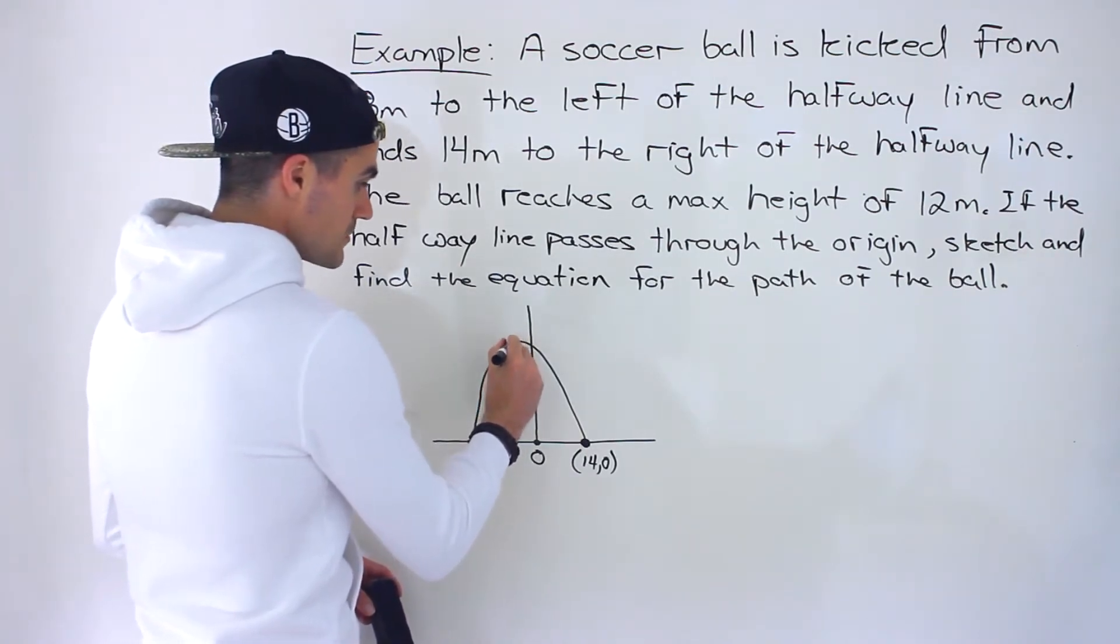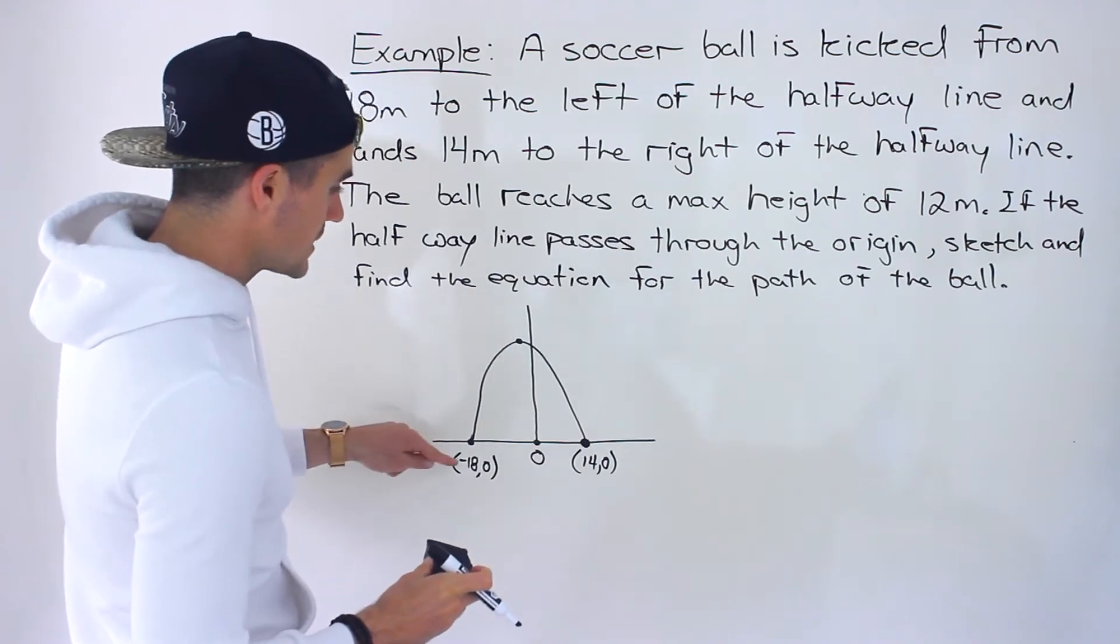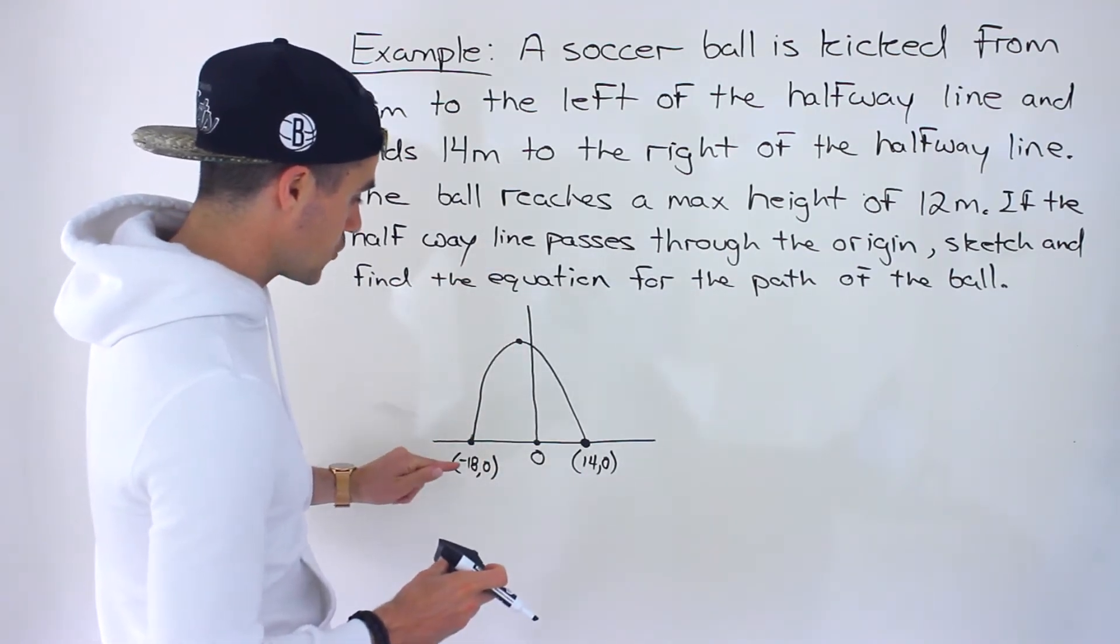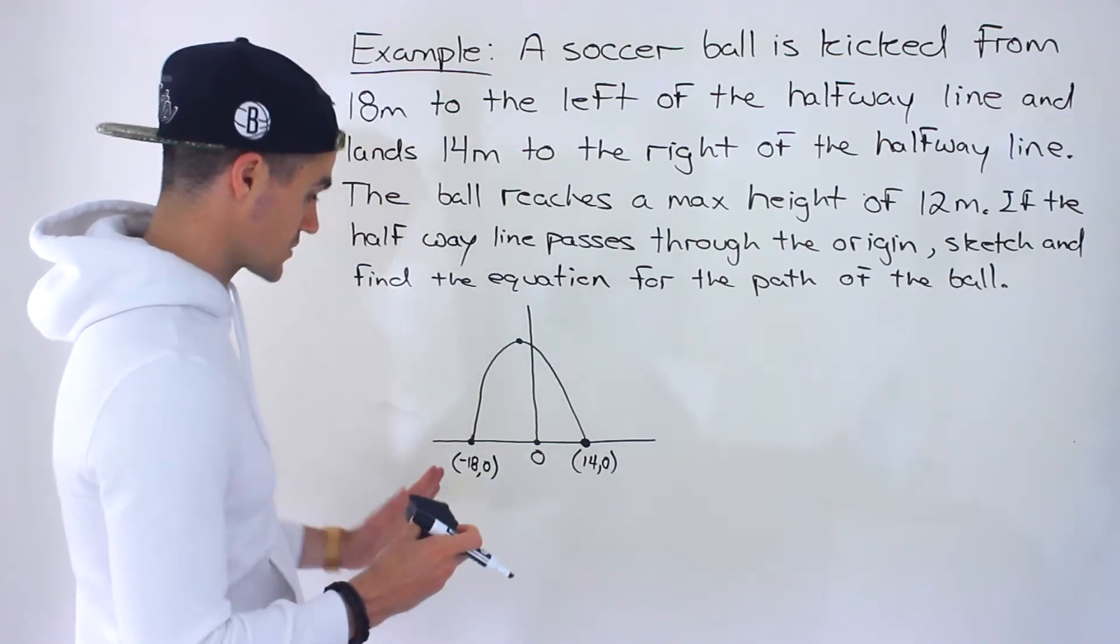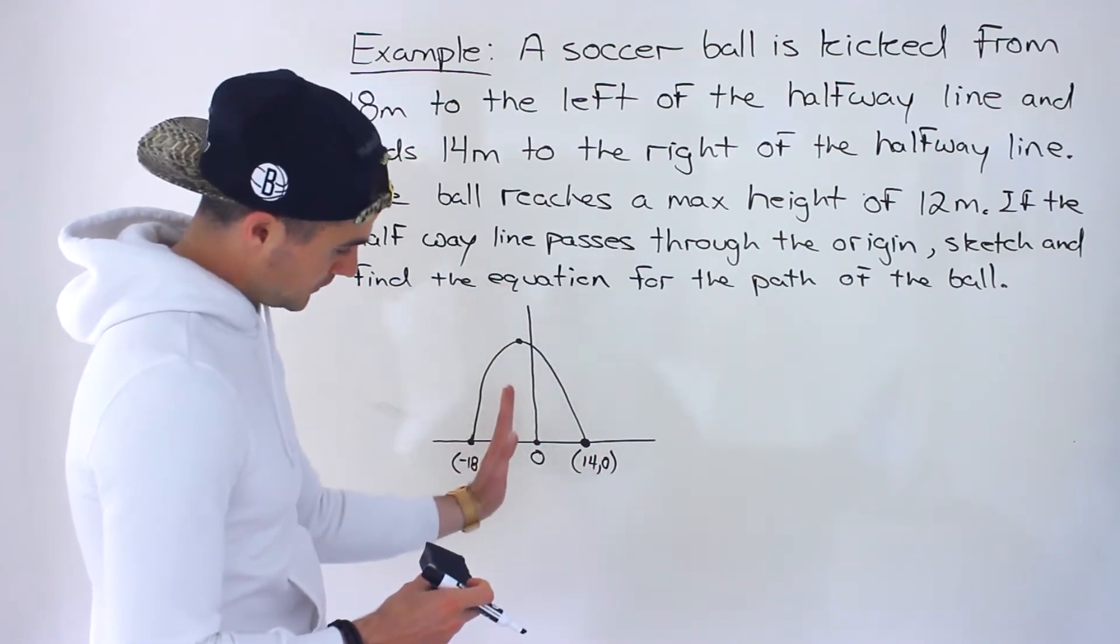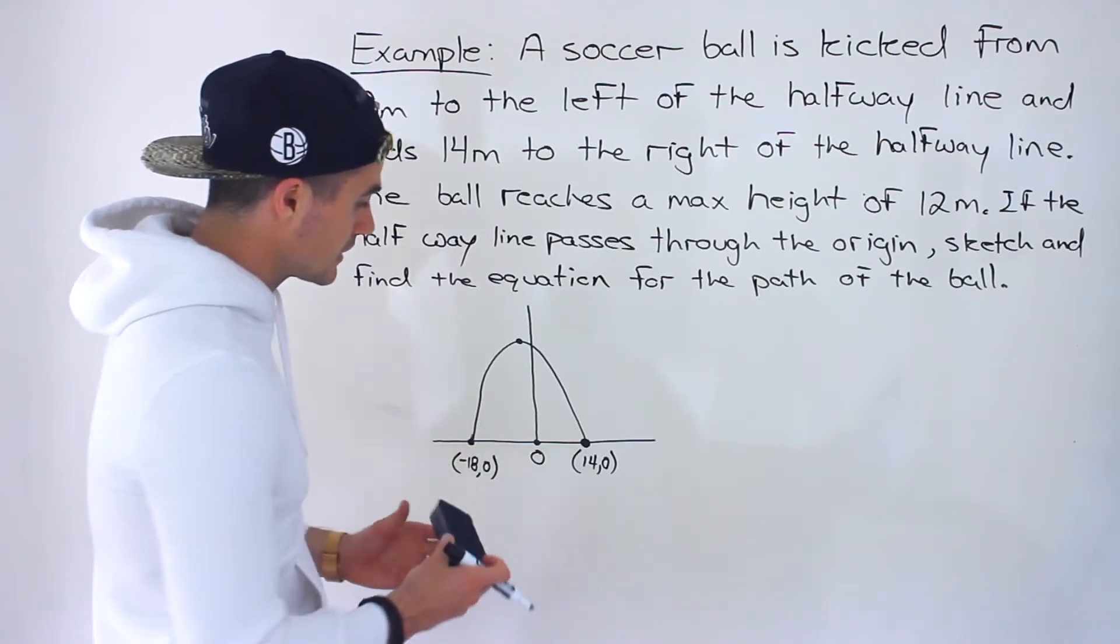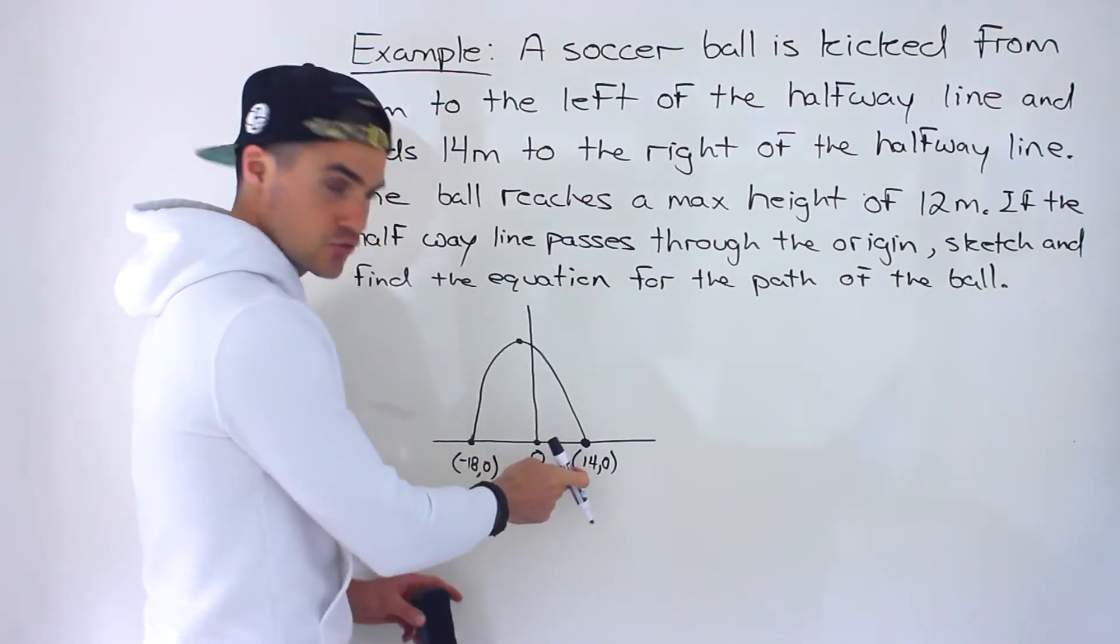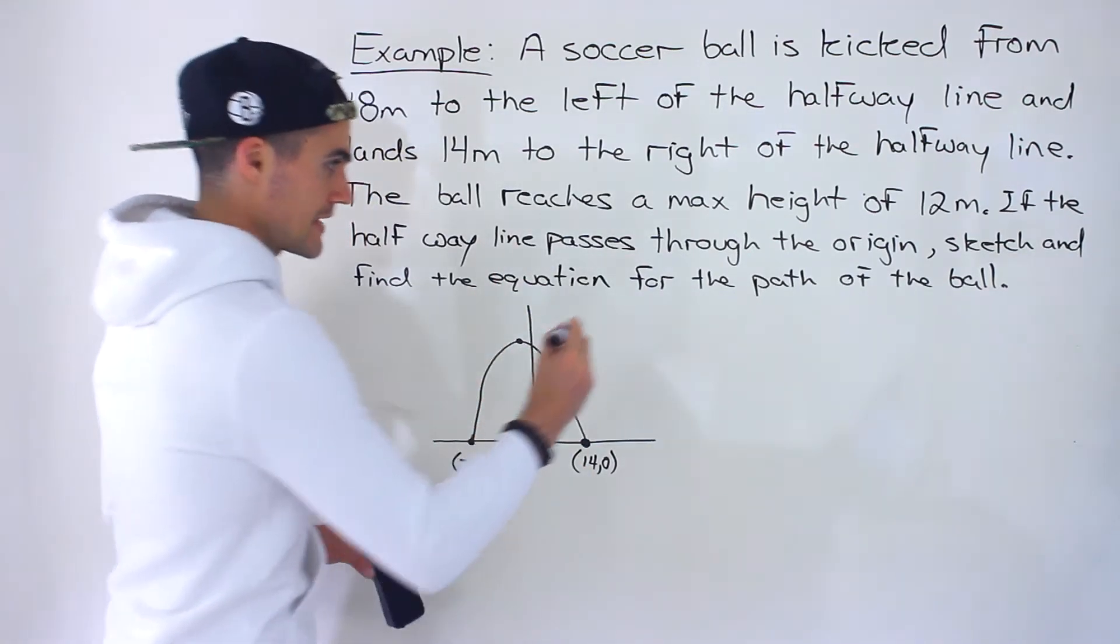It reaches a maximum height over here. The reason why I know that is because the axis of symmetry is going to be in between the intercepts, as we know from a previous video. So it's going to be in between negative 18 and 14. We could tell the halfway point is going to be on the negative portion of the graph because this negative 18 is greater than that 14 as an absolute value.